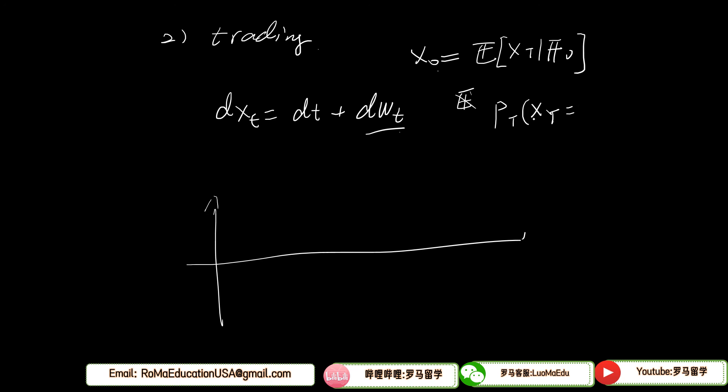Now I want to know the probability of price that reaches the profit taking before the stop loss. And over here, the profit taking, let's say, equals to 1, and the stop loss equals to negative 2. If it is a martingale, it's very easy to solve this question, but it's not a martingale in this case because we do have a dt, which is a drift term here.